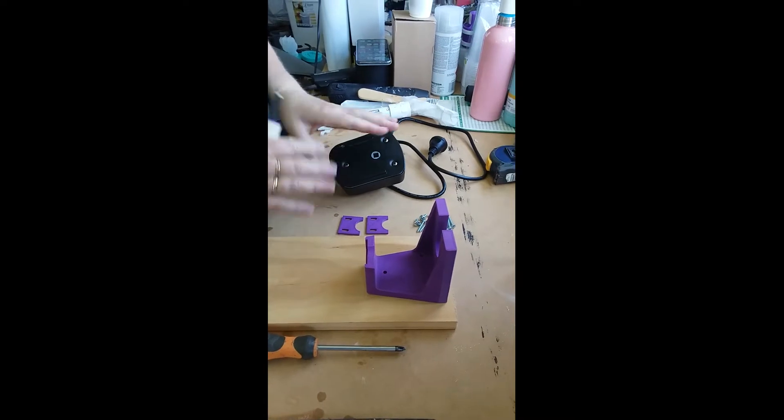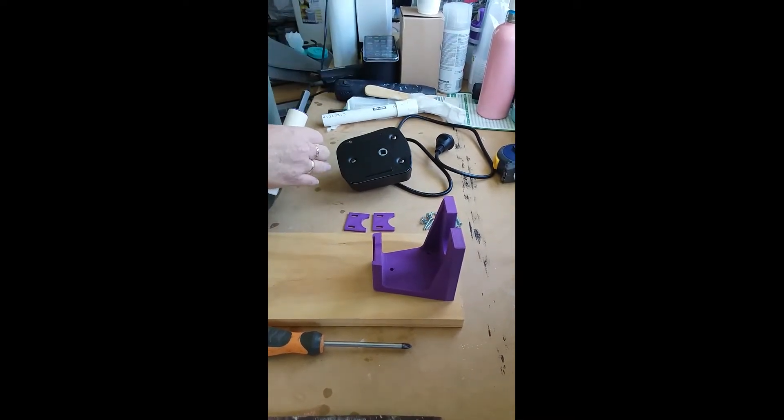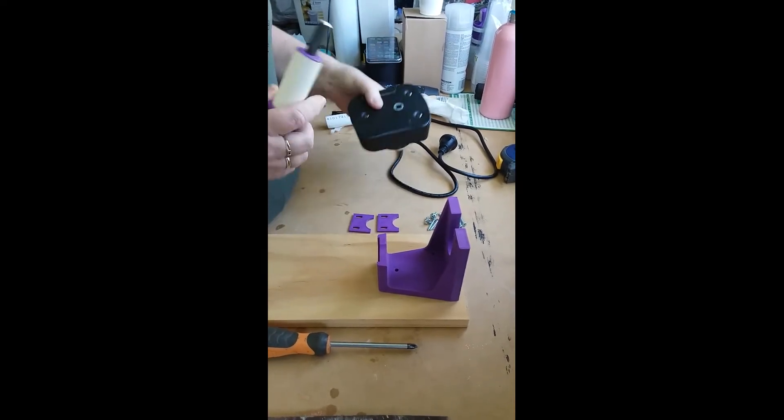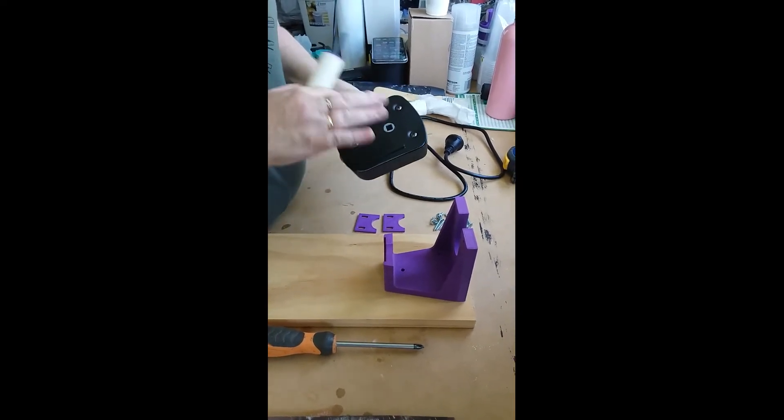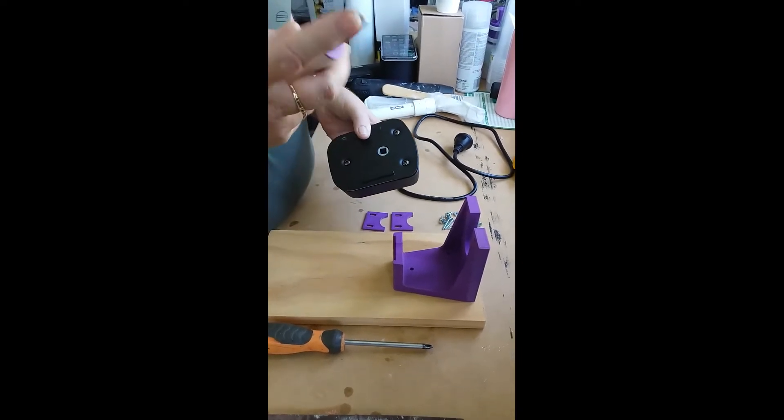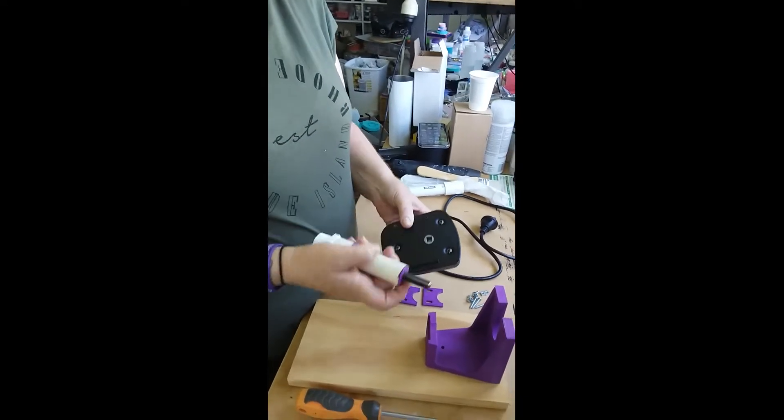They are specifically built for the gas mate rotisserie motor but you can also use them for the jumbuck. The only difference between them, apart from where the screw holes sit which we've taken into account, is the shaft is slightly thicker or thinner in the jumbuck.